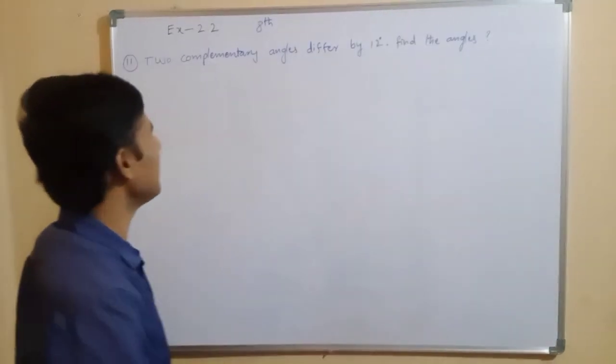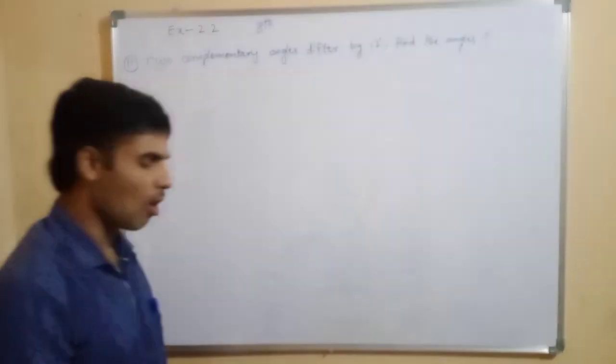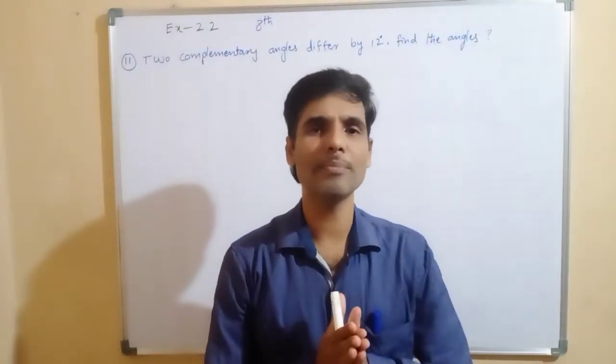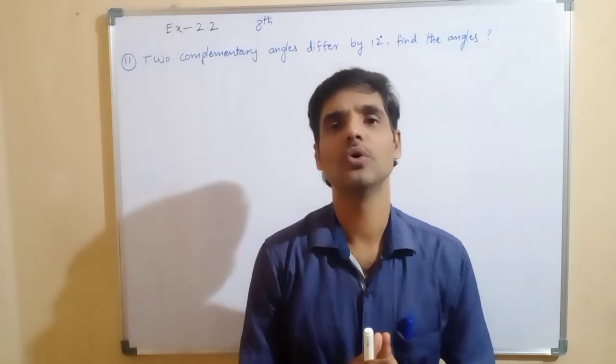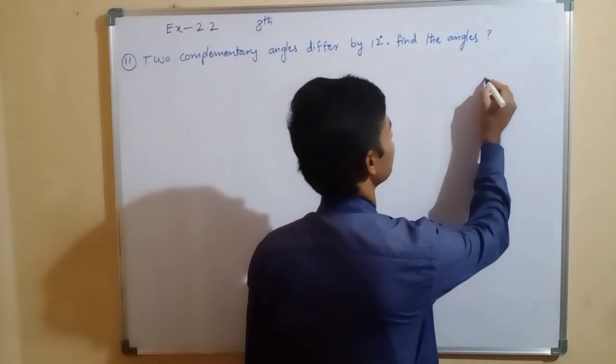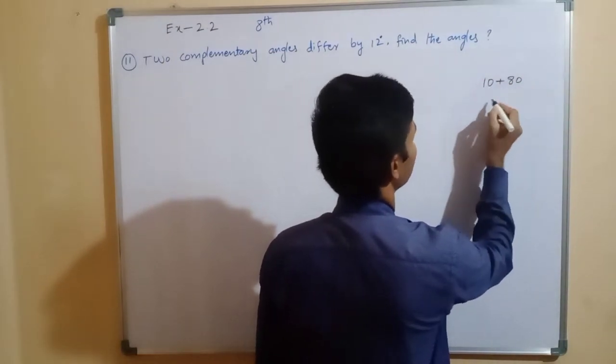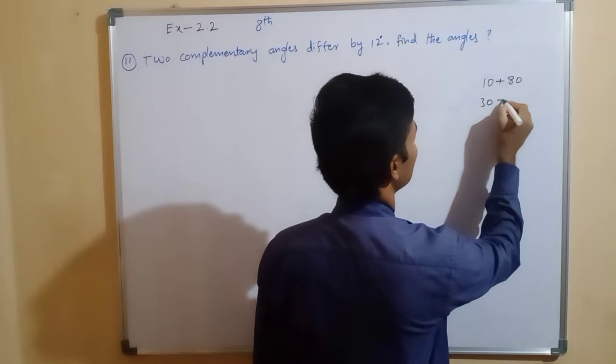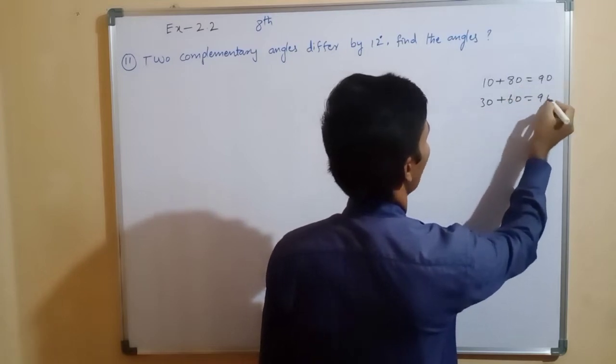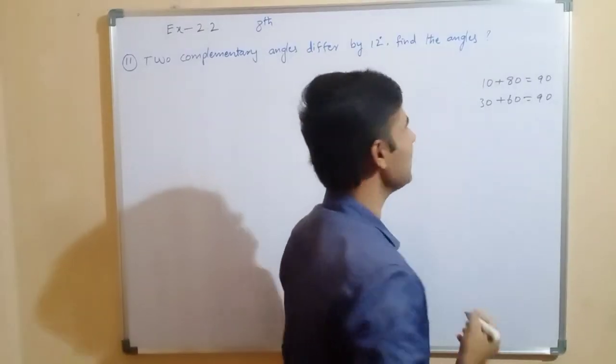Okay, complementary angles. First we have to know the complementary angles. Complementary angles means what here? Sum of the two angles is equal to 90 degrees. For example, here see, 10 and 80 and 30 plus 60. So any two angles that together get the 90 degrees. So these are called the complementary angles.